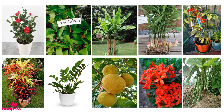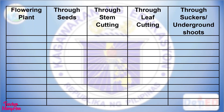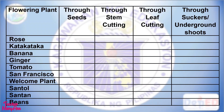Now, look closely at these flowering plants. Are you familiar with them? Okay, so this is the table that you're going to complete. We have the names of the flowering plant — write them in the first column. Then check if the flowering plants reproduce through seeds, through stem cutting, through leaf cutting, or through suckers or underground shoots. I'll give you five minutes to do this. Alright, let's check your work.